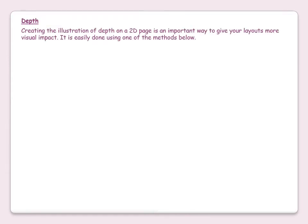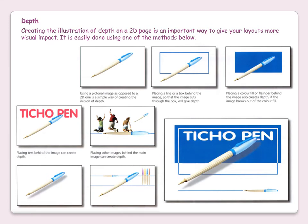Creating the illusion of depth in a 2D page is an important way to give your layout more visual impact. It is easily done using several methods. Placing a line or a box behind the image so the image cuts through the box will give depth. Placing a colour fill or flash bar behind the image creates depth if the image breaks out of the colour fill. Placing text behind an image, placing other images behind the image, creating a drop shadow behind the image, or using a combination of these can all help to create depth in a page.